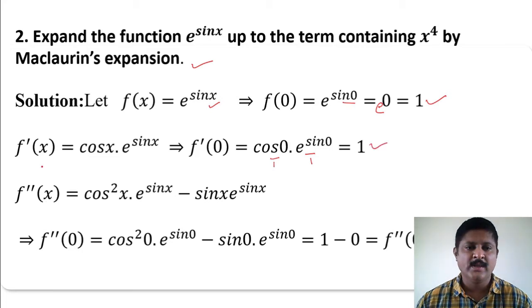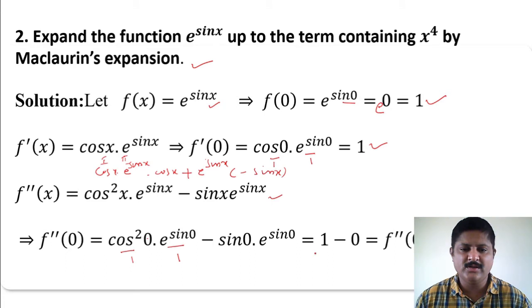Differentiate f'(x). Use product rule. First function f'(x) equals cos x. Keep cos x as it is, cos x into cos x, plus cos x into differentiation of e to the power sin x which is e to the power sin x into cos x, plus keep e to the power sin x as it is, and differentiation of cos x is minus sin x. Therefore f''(x) equals cos squared x into e to the power sin x minus sin x into e to the power sin x. f''(0) equals cos squared 0 into e to the power sin 0 minus sin 0 into e to the power sin 0, which equals 1 into 1 minus 0, therefore f''(0) equals 1.